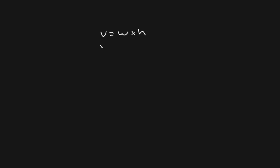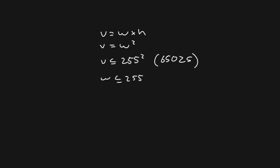It would be nice to decide on a fixed square size for our mesh chunks. Unity imposes a limit of 65,025 vertices per mesh, which means our width must be less than or equal to 255. I'm going to settle on a width value of 241, since i must be a factor of width minus 1 — which is 240 — and 240 has the nice property of being divisible by all even numbers from 2 to 12, giving us a very nice range of values for i to work with.